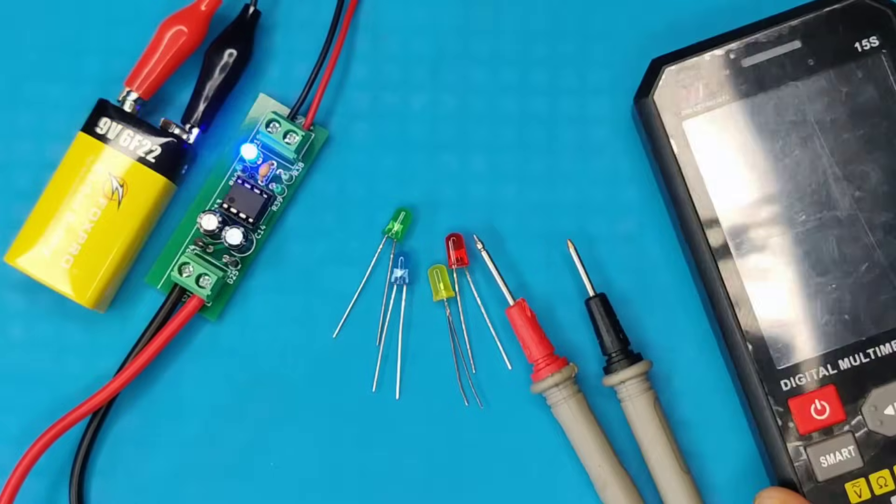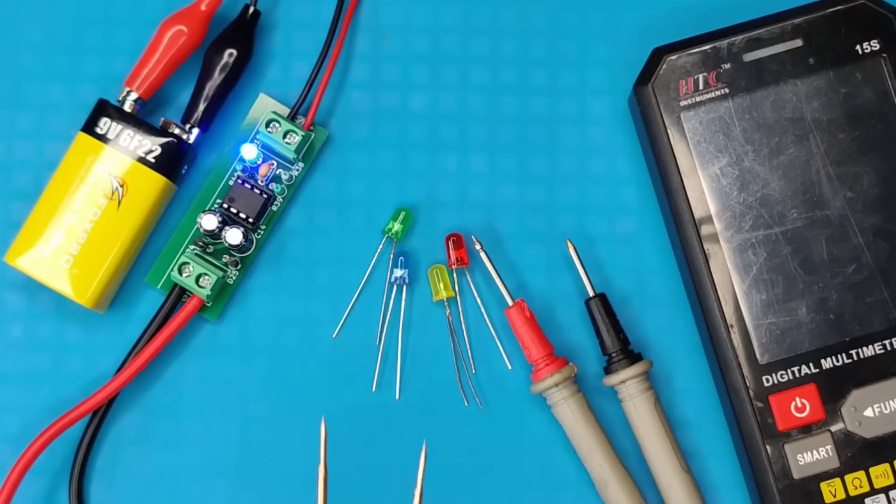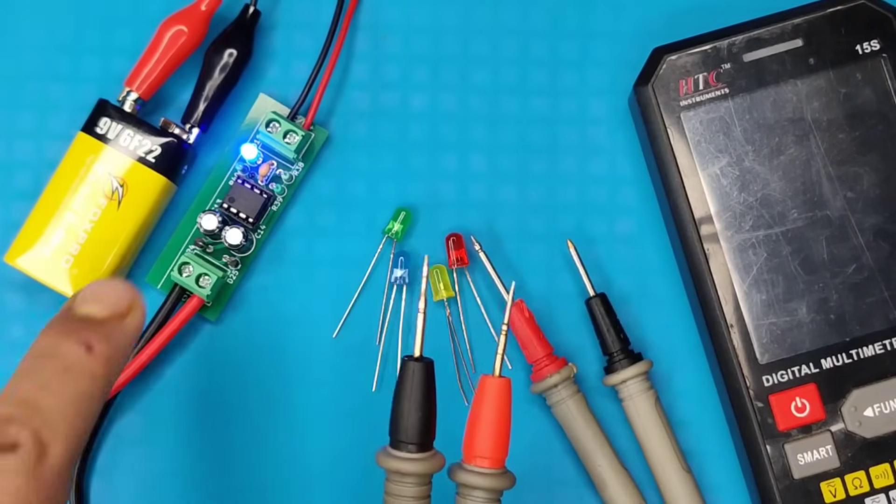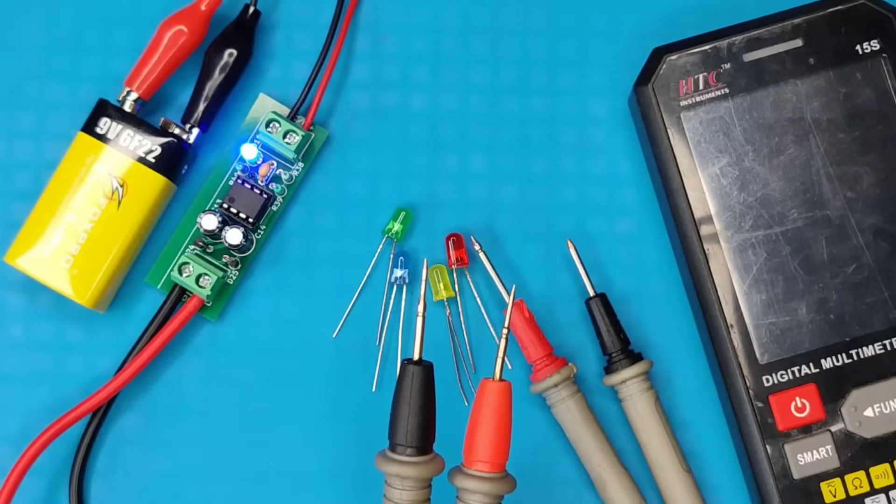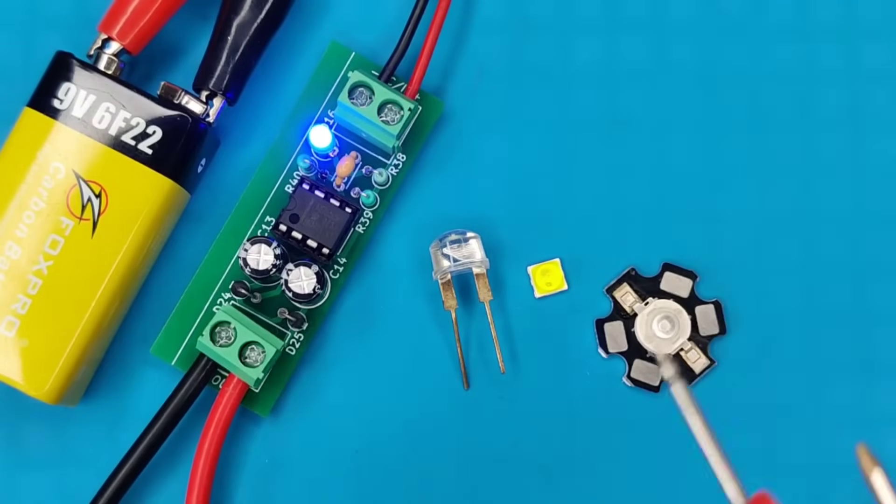You can also use multimeter to track the voltage for zener diode testing and connect probes at output connector. You can also test different voltage of LEDs.